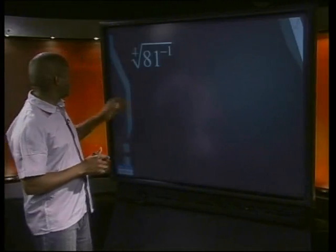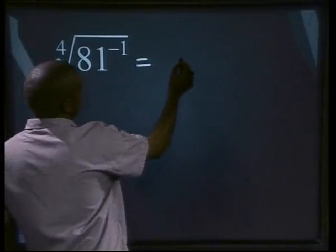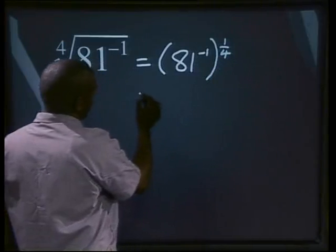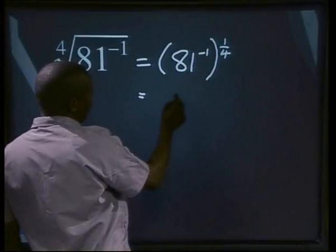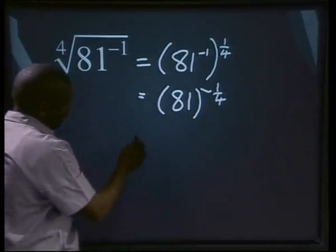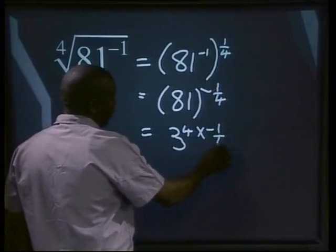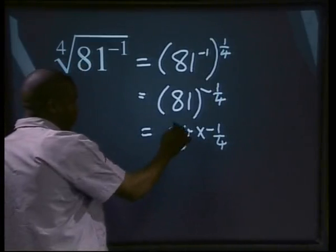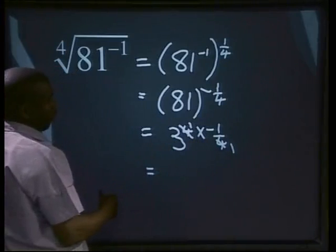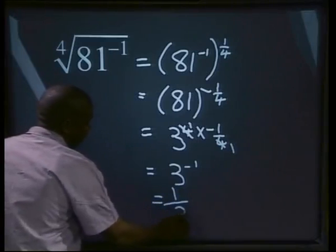Now for the last one — simplify the 4th root of a to the power of 1, all to the power of minus 1. This can be written as a to the power of 1, all to the power of minus 1, all to the power of 1 over 4. Multiplying minus 1 by 1 over 4 gives minus 1 over 4. Now, a to the power of 1 can be written as 3 to the power of 4, so we multiply that by minus 1 over 4. The 4s cancel, giving us 3 to the power of minus 1, which equals 1 over 3.